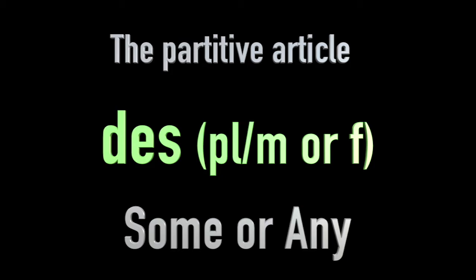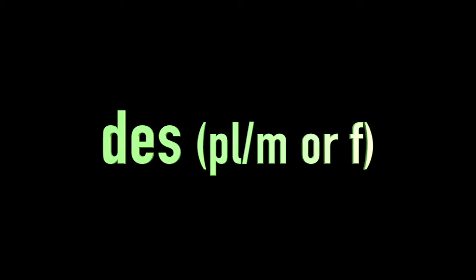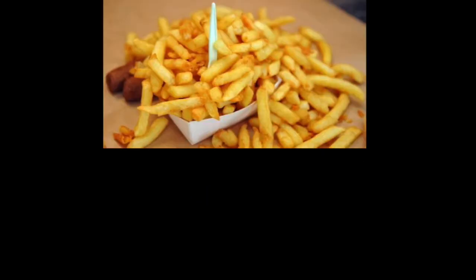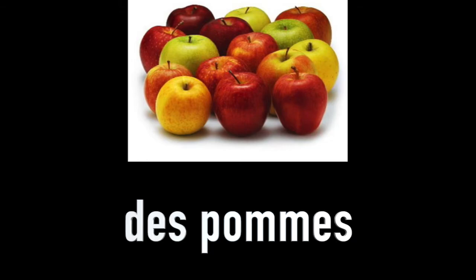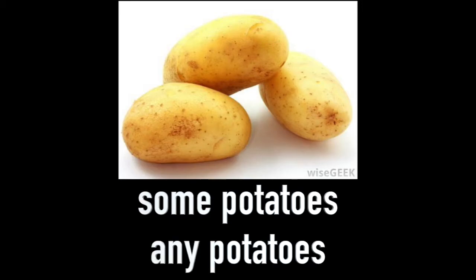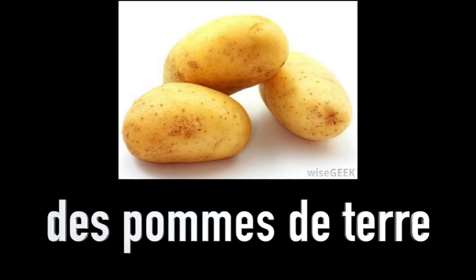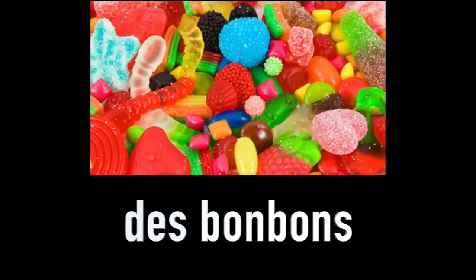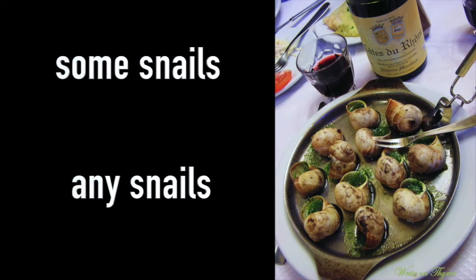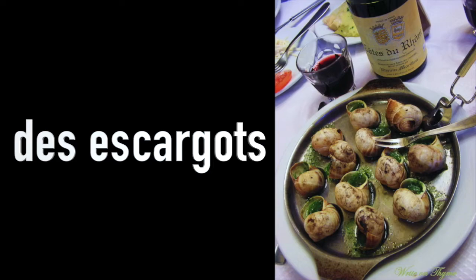Now let's look at our partitive article for plural nouns. The word for some or any is des. So for example, some or any tomatoes — des tomates. Some chips or any chips — des frites. Some or any apples — des pommes. Some or any potatoes — and these are 'apples of the earth' — des pommes de terre. Some sweets or any sweets — des bonbons. And a traditional French dish: some snails — des escargots.